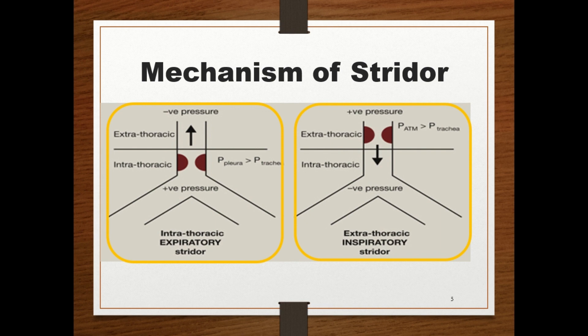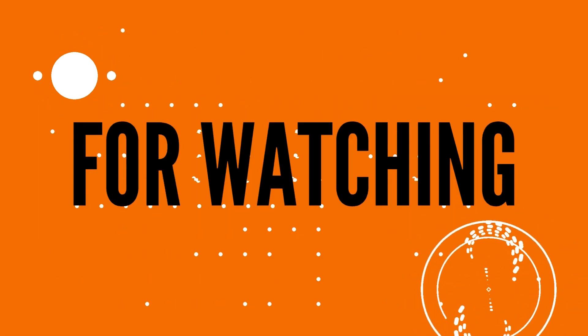If the obstruction is severe, to-and-fro stridor can occur — that is, biphasic stridor. Thanks for watching. Hope you enjoyed learning. Stay tuned for the next video.